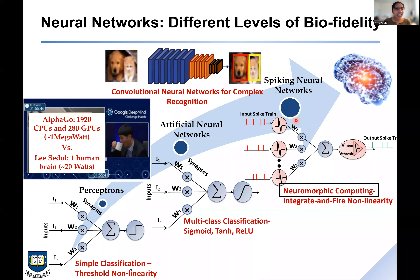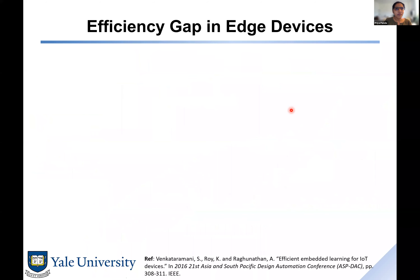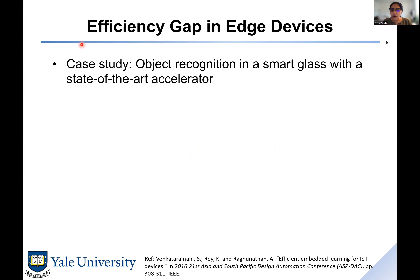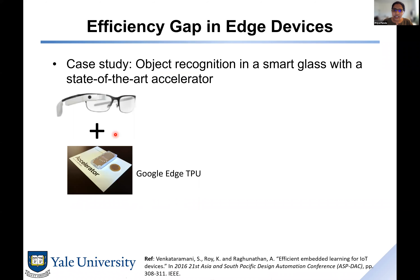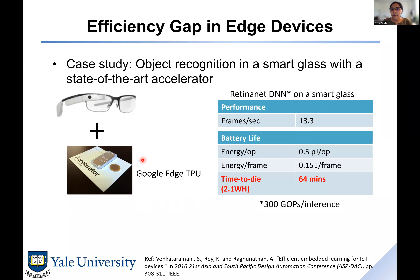To motivate why energy efficiency is such a key concern, consider a case study from a group at Purdue. They conducted an object recognition application on a smart glass with a state-of-the-art accelerator — a Google Edge TPU — implementing a deep neural network called RetinaNet, a standard network for object recognition. They wanted to measure the latency, throughput, and power constraints of this Edge TPU.